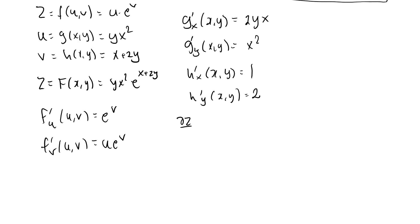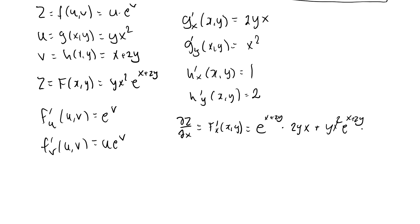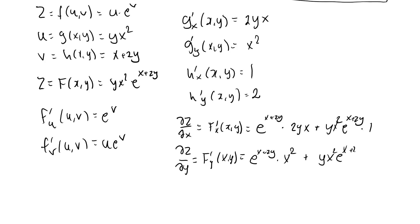From the chain rule, the partial derivative of z with respect to x, or f prime x of (x,y), equals f prime u — which is e to the v, with v equal to x plus 2y — times g prime x, which is 2yx, plus f prime v — which is y x squared times e to the x plus 2y — times h prime x, which is 1. Similarly, the partial with respect to y gives an additional term with g prime y equal to x squared and h prime y equal to 2.